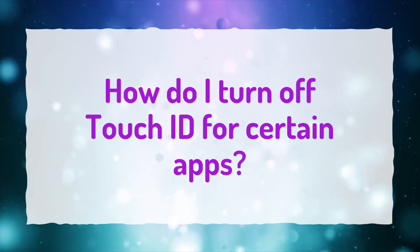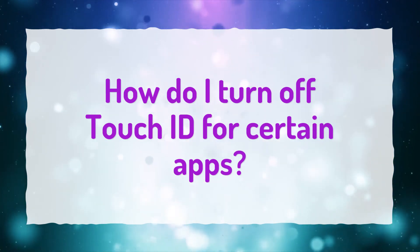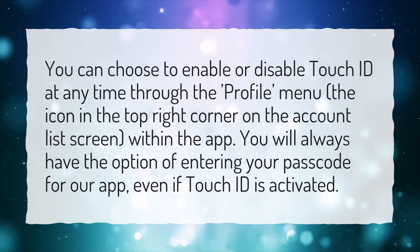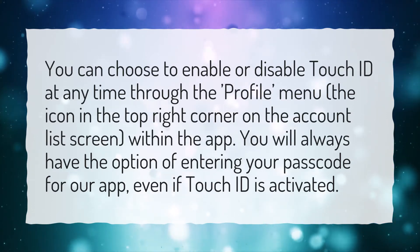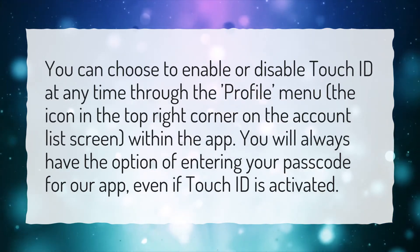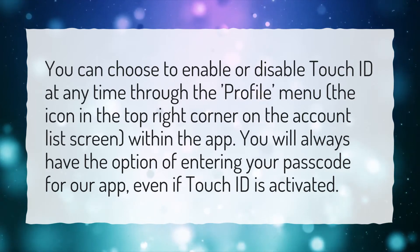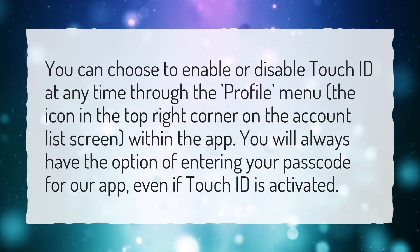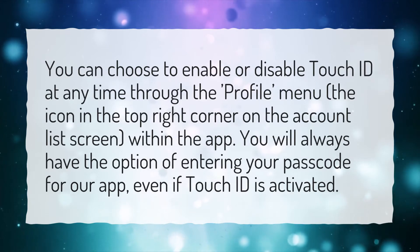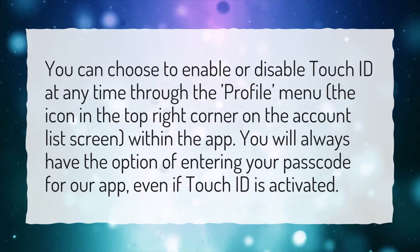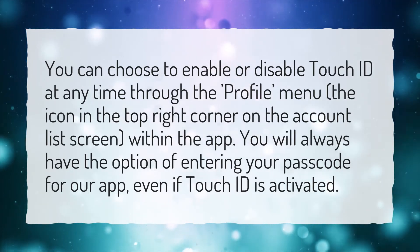How do I turn off Touch ID for certain apps? You can choose to enable or disable Touch ID at any time through the Profile menu, the icon in the top right corner on the account list screen within the app. You will always have the option of entering your passcode for our app, even if Touch ID is activated.